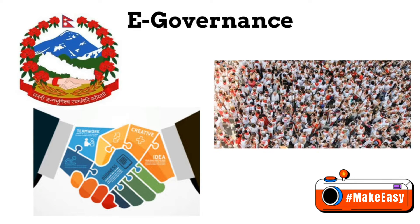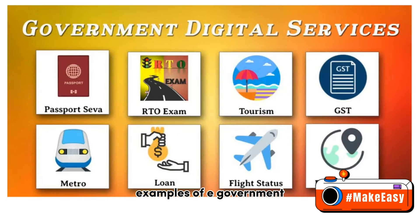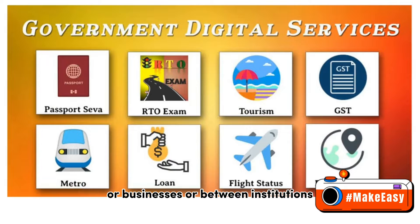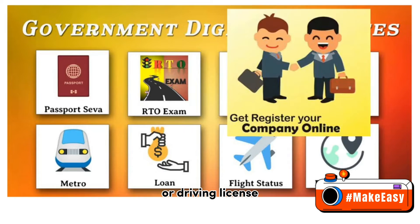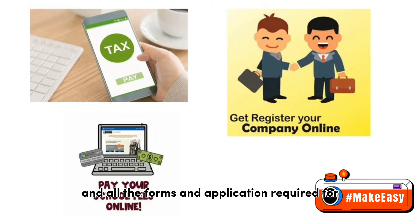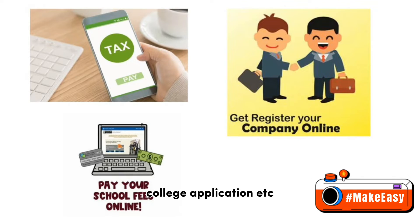E-governance operates at national, state, and local levels. Examples of e-government include various services offered for citizens or businesses, or between institutions — such as e-procurement, filling tax returns, renewing ID, passport, or driving license, and all the forms and applications required for starting a business, college applications, etc.